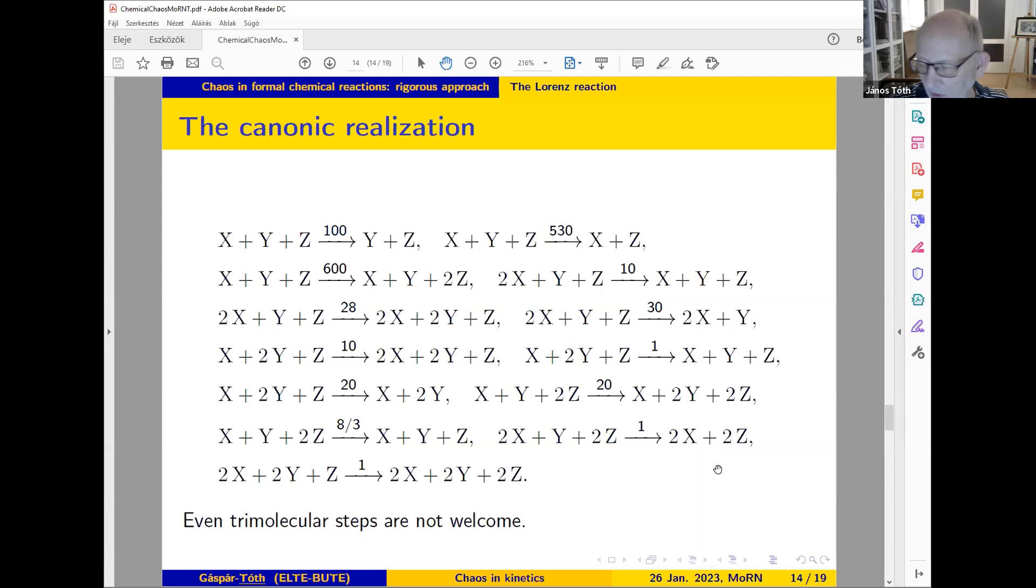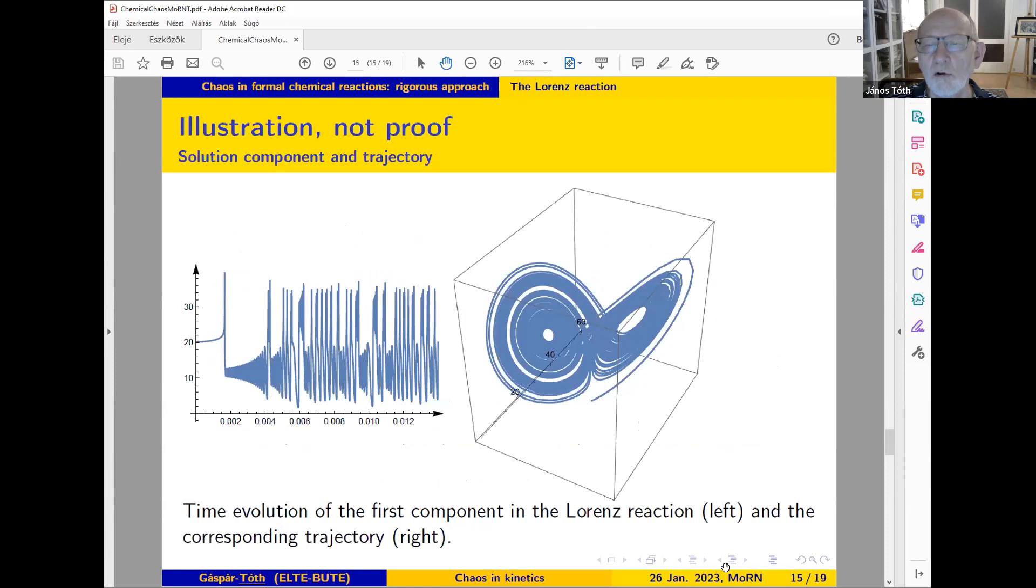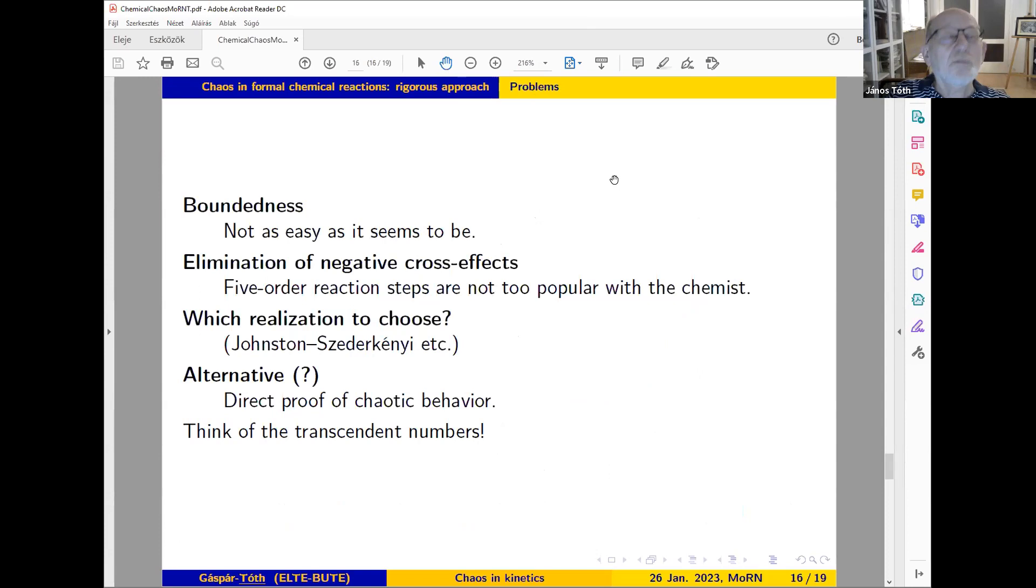We receive this ugly result, which is the canonical realization of the previous equation. If you write down the induced kinetic differential equation of this reaction, you receive the previous one. Why do I say it's an ugly realization? Because even three-molecular steps are not welcome, and here we have five-molecular steps. It seems very hard to eliminate this problem. If you have three equations which are nonlinear, you have at least one term of second degree. If you multiply this by a monomial of third degree, you always arrive at five-degree terms, which we don't like. This is illustration—if you calculate one of the components and trajectories, you receive a figure very similar to the original one.